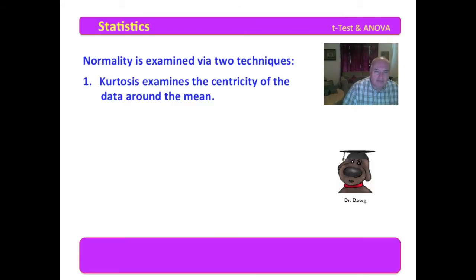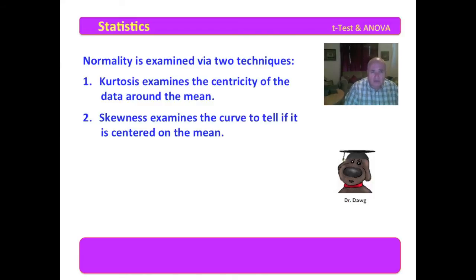Normality is generally examined via two techniques. The first of these is kurtosis, which examines the centricity of the data around the mean. In a normal distribution, the bell curve comes up and the data not only cluster around the mean, but they do that in a frequency within so many standard deviations on each side of the mean. What kurtosis does is it examines the data to see if they are within those standard deviations. Are they too close to the mean or are they too far from the mean? Or do they fit the mean within the standard deviations as they should?